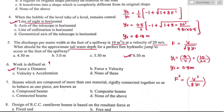Question number seven: beams composed of more than one material rigidly connected together so as to behave as one piece are known as composite beams. Option B is the right answer. Composite beams are used to increase strength and stiffness, and are normally rolled or fabricated steel sections that act compositely with a slab.